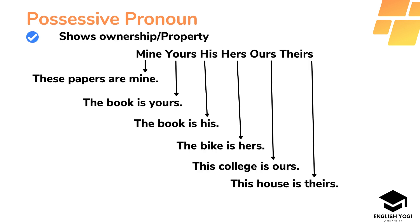The next type of pronoun is possessive pronoun, and we use this type of pronoun to show ownership or property. Examples are: mine, yours, his, hers, ours and theirs. In the first example: 'These papers are mine.' The second example: 'The book is yours.' 'The book is his.' 'The bike is hers.' 'This college is ours and this house is theirs.' So all these words show ownership and property of something.